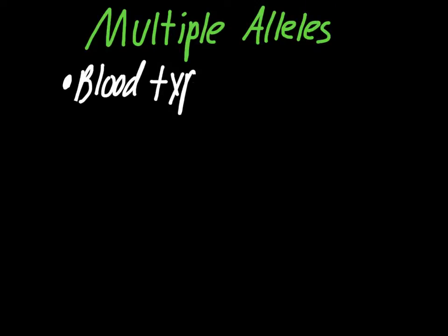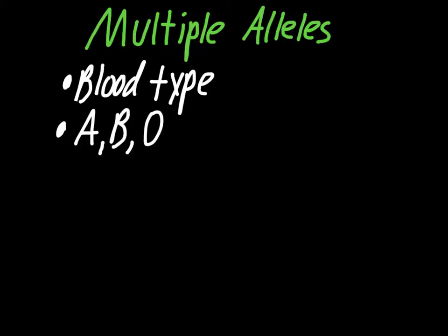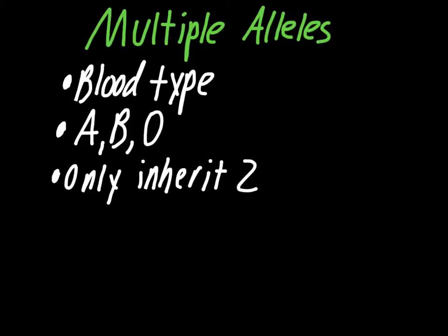With blood type, there are multiple different options for the alleles — you can get either A, B, or O — but you still only inherit two. You could end up being type AA or BB for your genotype, in which case you're really only getting one of the alleles. The important thing is that even though there are many options out there, you still only get two of them. That means blood type is controlled by one gene.